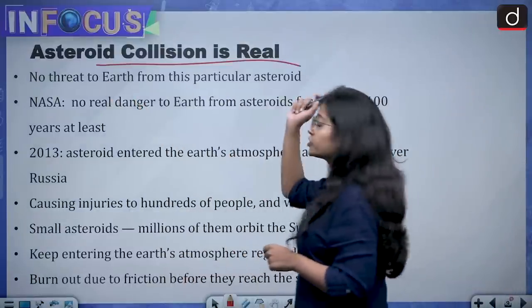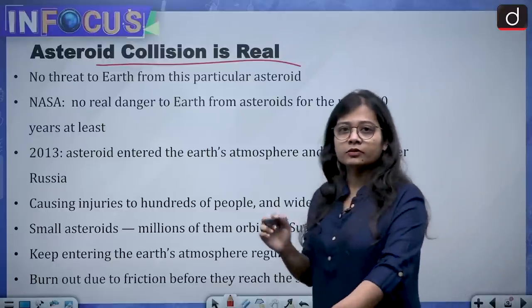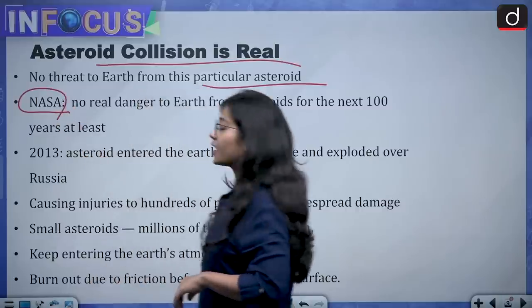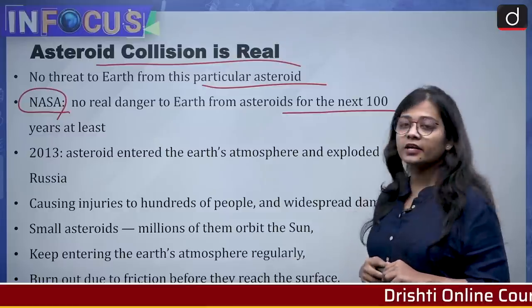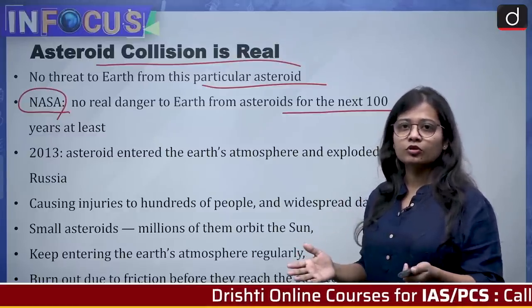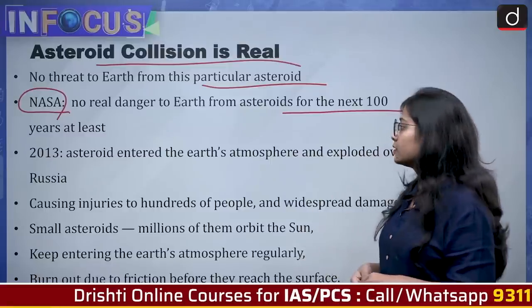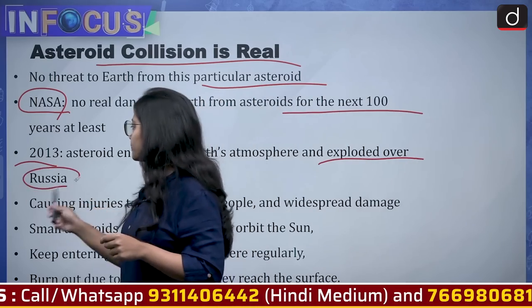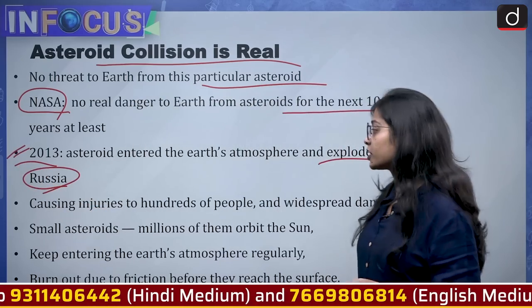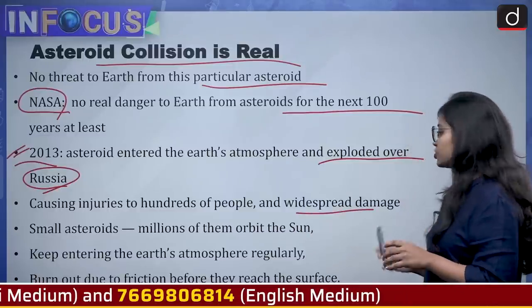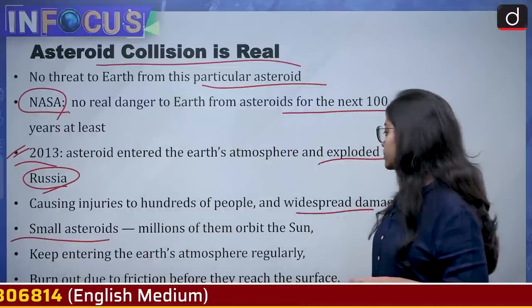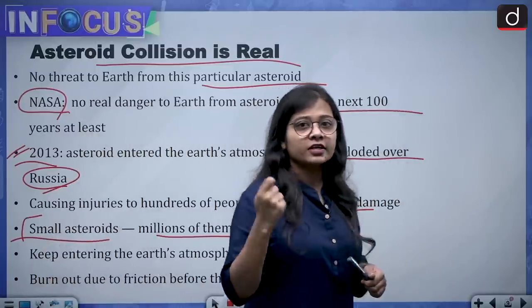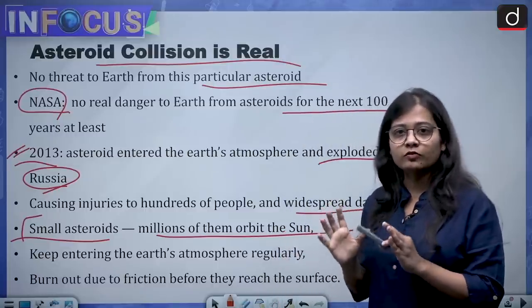Now, whether asteroid collision takes place in reality or not: the mission that happened now involved no threat to Earth from this particular asteroid. NASA has said there is no real danger to Earth from asteroids for at least the next 100 years. But that does not mean the threat does not exist. In 2013, an asteroid entered Earth's atmosphere and exploded over Russia, causing injuries to people and significant damage. There are millions of small asteroids orbiting the sun, but the real problem comes from big asteroids — even a single large one could create major damage.